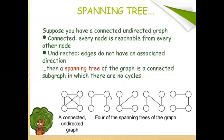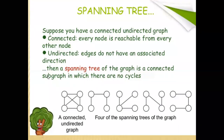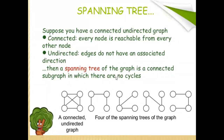Next, spanning tree. A spanning tree means suppose we have a connected undirected graph. Connected means every node is reachable from every other node. Undirected means the edges do not have an associated direction. The spanning tree of any graph is a connected subgraph in which there is no cycle.